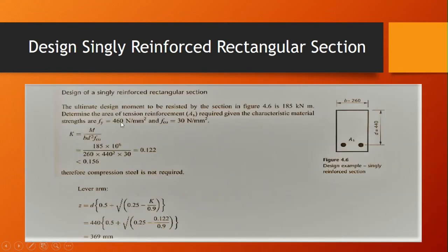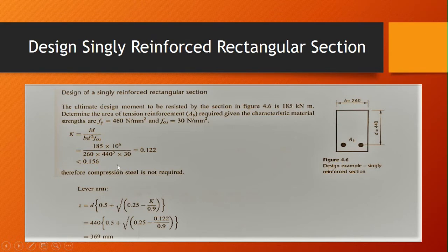Substituting the values: the design moment is 185 kNm, which we convert by multiplying by 10⁶. We divide by b = 260, then by d² = 440², and multiply by fcu = 30. This gives k = 0.122, which is less than 0.156.